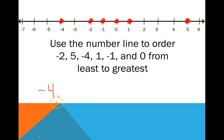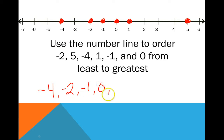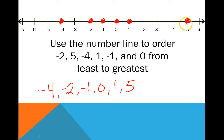Then we just work left to right. So the order from least to greatest is: negative 4, negative 2, negative 1, 0, 1, and 5. That's how we order from least to greatest.